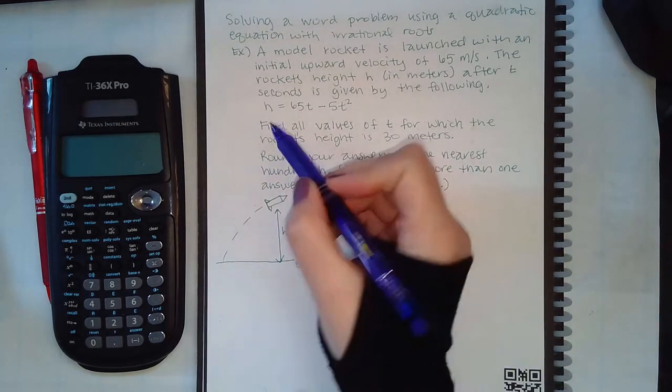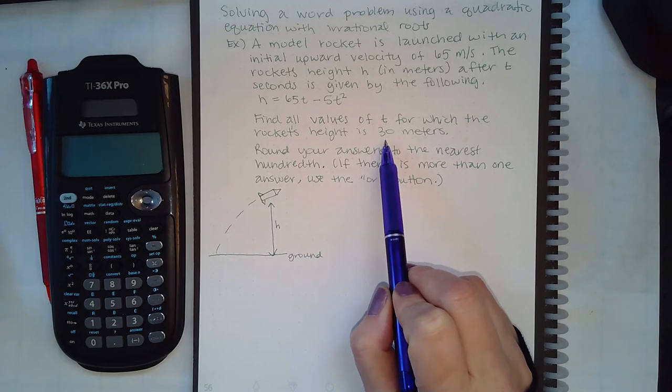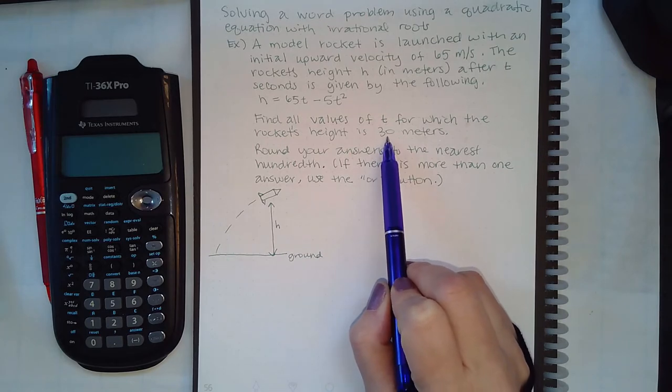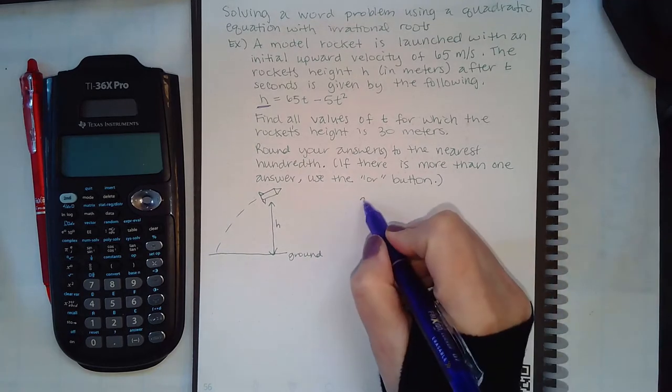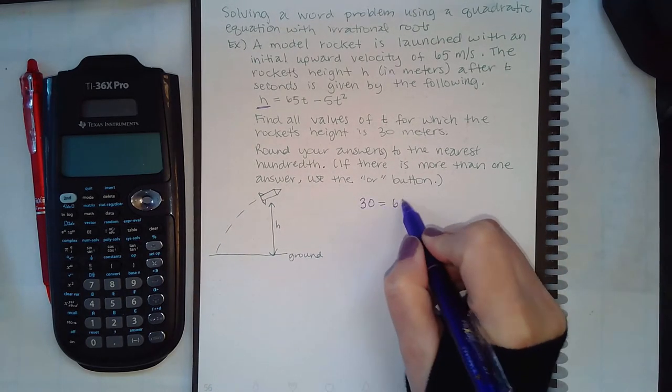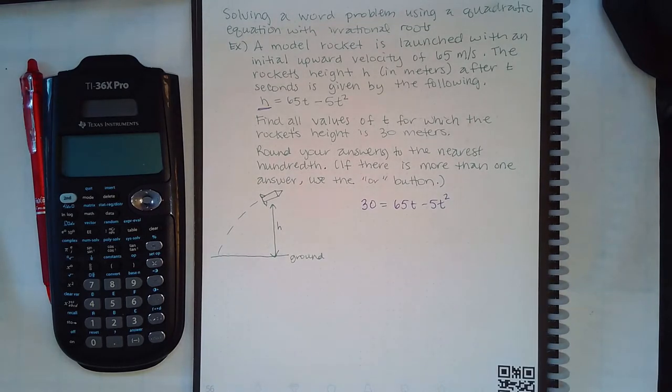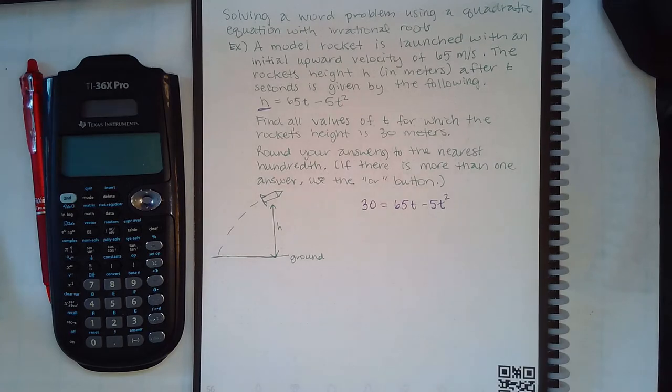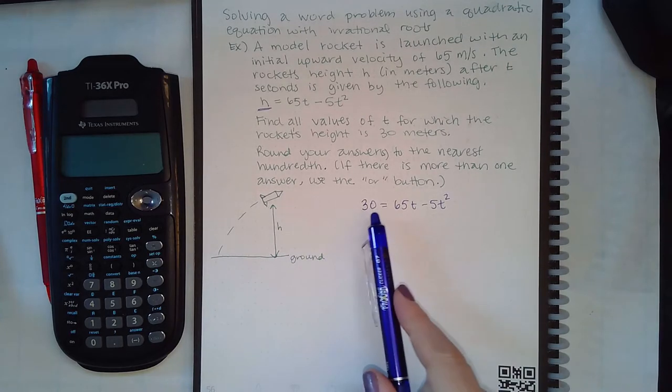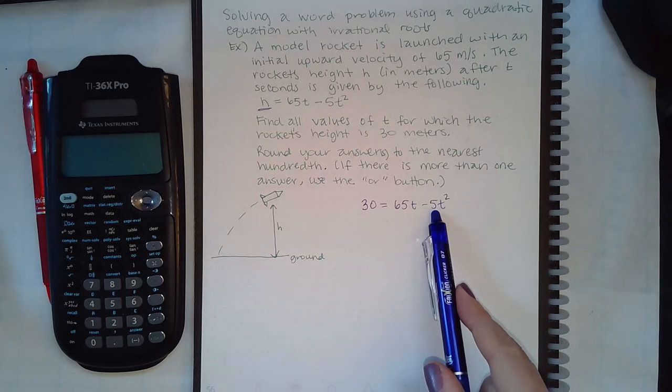Okay, so this is our formula here. Since they're wanting us to find where the height is 30 meters, this number here is what's going to become the 30. So we plug in 30 into that formula, and then we'll go ahead and solve this equation. Now this is a quadratic equation because of the t squared term. So we need to get all the terms over to one side. This is a negative 5t.